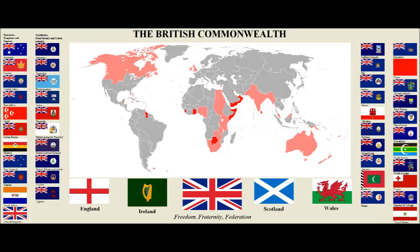A few countries have been forced out. In 1961, the Commonwealth sent a strong message against apartheid by forcing South Africa to resign. South Africa was allowed back in the Commonwealth in 1994 when apartheid ended.